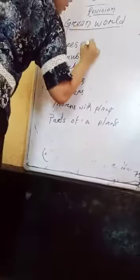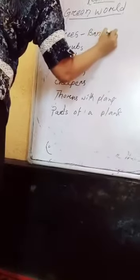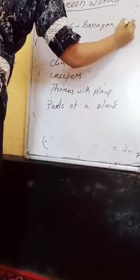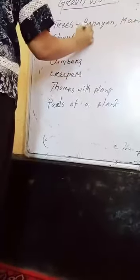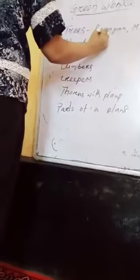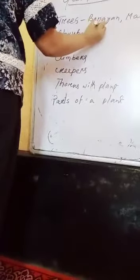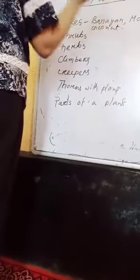First one is trees. Trees are very big. Examples of trees are the banyan tree, mango tree, and coconut tree. These are examples of trees.